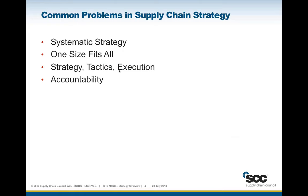A big problem in strategy — and this came up many times in beta testing of M4SC training — is that people say 'I've defined supply chains and correctly articulated the strategy, but I haven't defined accountabilities.' If a supply chain doesn't have an accountable party or owner — someone responsible for the resources and accountable for meeting the business strategy — you can do all the work you want but you won't be able to define a strategy that's agreed on and moved into tactics and execution. So accountability and context is a really big problem in supply chain strategy.